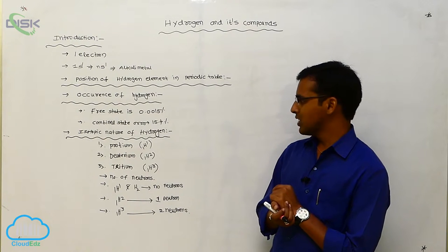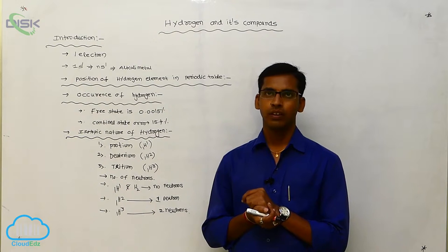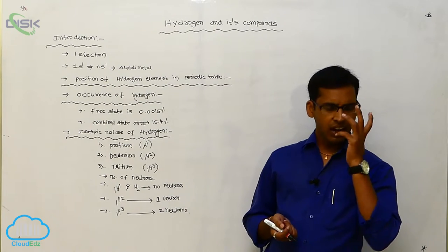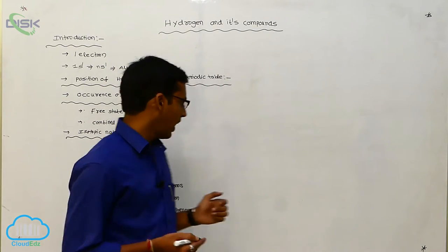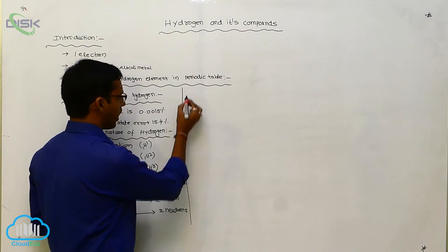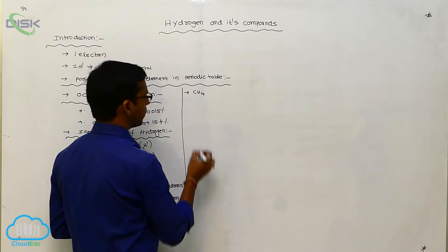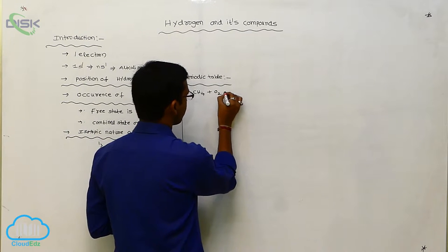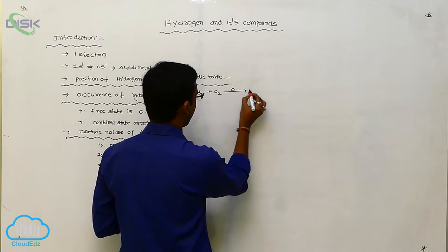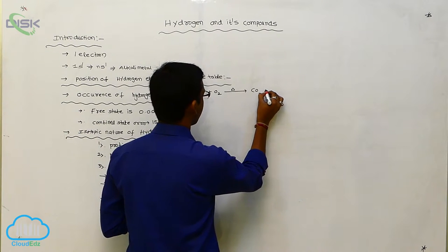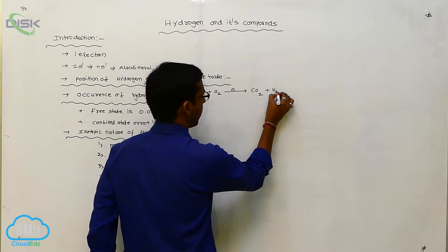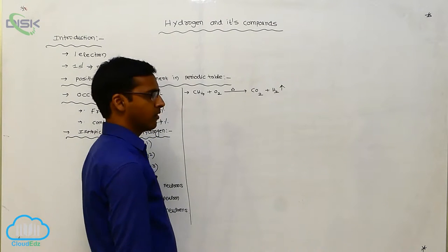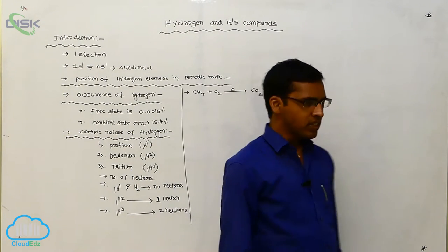This is the isotopic nature of hydrogen. Hydrogen occurs in different forms, such as in hydrocarbons. The decomposition of hydrocarbons like CH₄ — methane reacted with oxygen at higher temperature — produces carbon dioxide and hydrogen gas.